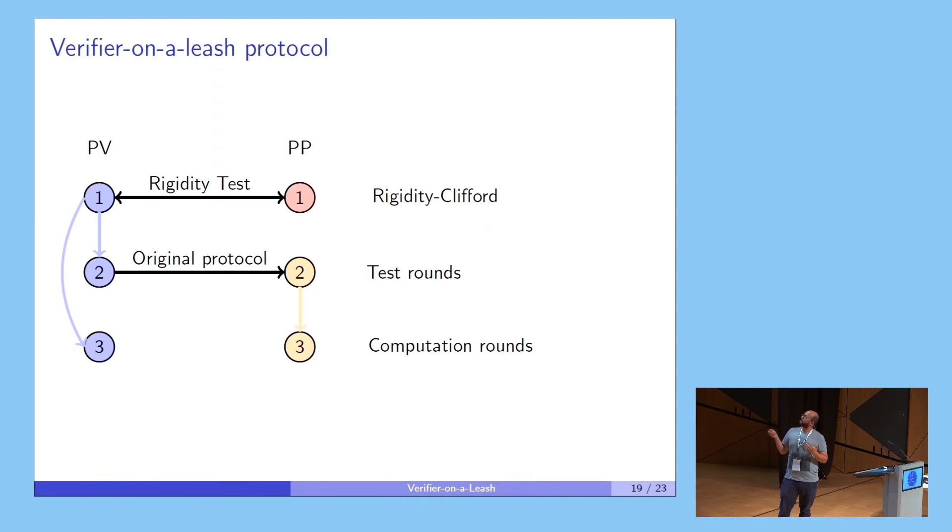Here is another way of seeing it. We have this Rigidity-Clifford test that self-tests PV and PP when they pass this test with high probability. Then from PV perspective, he'll be honest in all of the rounds. And then from this, we can prove that if they pass the other test with high probability, then they're doing the correct computation at the end of the day.